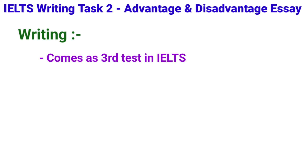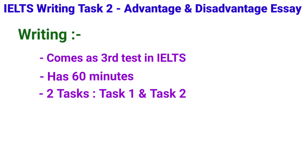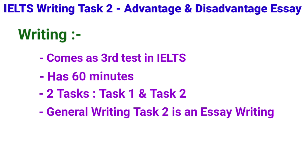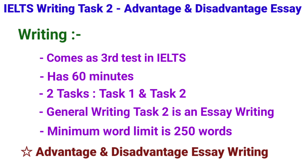Writing comes as the third test in IELTS and has 60 minutes. Writing has two tasks — Task 1 and Task 2. General Writing Task 2 is an essay writing and you should write a minimum of 250 words. Advantage and Disadvantage Essay Writing is one of the essay types.